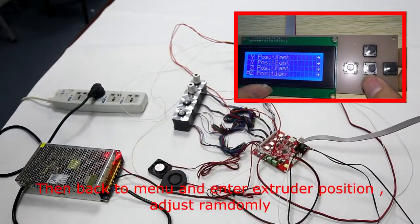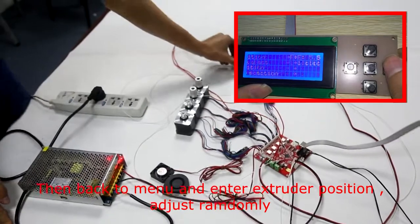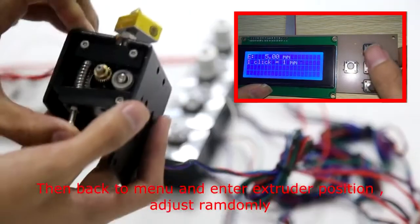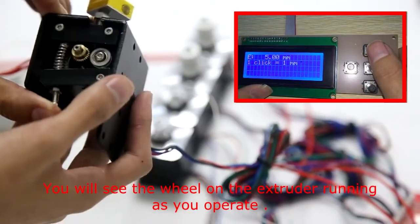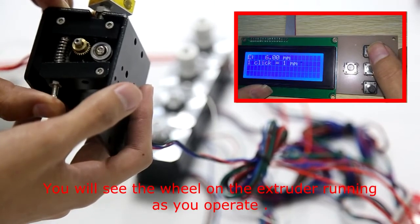Then back to the menu and enter extruder position. Adjust randomly. You will see the wheel on the extruder running as you operate.